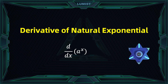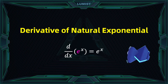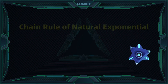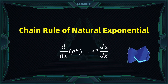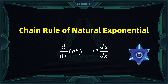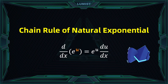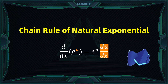There is a special case: if a equals e, then the derivative of e to the power of x always equals e to the power of x itself — the function itself. The natural exponential function has the special property that its derivative equals itself. When applying the chain rule, the derivative of e to the power of any function u is e to the power of u times the derivative of u.